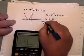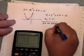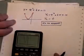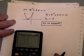If you put these numbers into the quadratic formula, you would find that you would get the square root of a negative number.